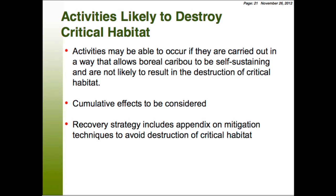Activities likely to destroy critical habitat are those resulting in habitat loss, habitat degradation, or habitat fragmentation — occurring in such a manner, place, and time that, after appropriate mitigation, they would compromise the ability of a range to be maintained or restored to 65% undisturbed habitat, or reduce connectivity within a range. Connectivity within a range has been identified as important in this final recovery strategy. Destruction of critical habitat can also occur through increased predator and/or alternate prey access to undisturbed areas, or through removal or alteration of biophysical attributes necessary for boreal caribou survival.